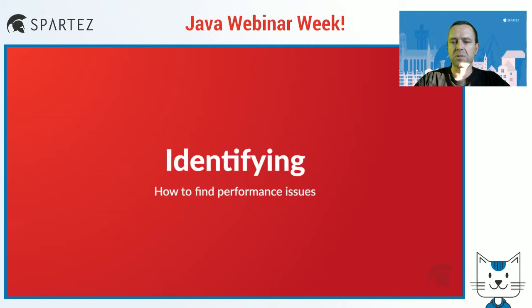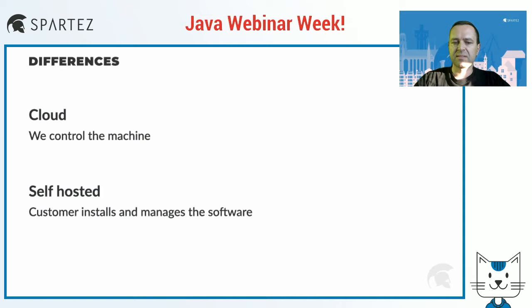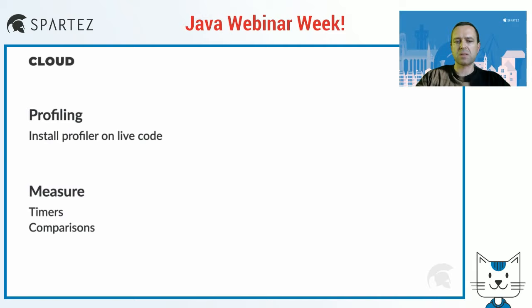So we briefly talked about reasons. Let's now discuss how we can identify performance issues. There are significant differences between cloud and self-hosted work. In cloud, we control the machine on which our software is running, so we are in a better position — there is much more we can do. In case of self-hosted, software is installed and managed by customers, and our possibilities are unfortunately limited. In cloud, we can install a profiler on the running code, and thanks to this we will quickly learn about problems that customers are actually experiencing. In case of self-hosted, there will be more guessing.